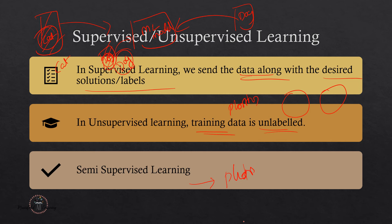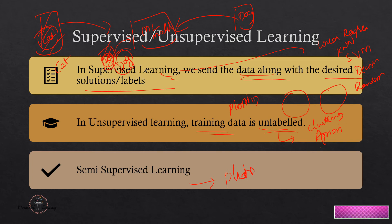To perform supervised and unsupervised machine learning, we have various algorithms. For supervised machine learning we have linear regression, K-Nearest Neighbors (KNN), support vector machines, decision trees, and random forests. For unsupervised learning, we can perform clustering with K-means clustering, and we can build recommendation models using the Apriori algorithm. We have various machine learning models to perform supervised and unsupervised learning tasks, and we are going to learn these in depth as we progress in our learning journey.